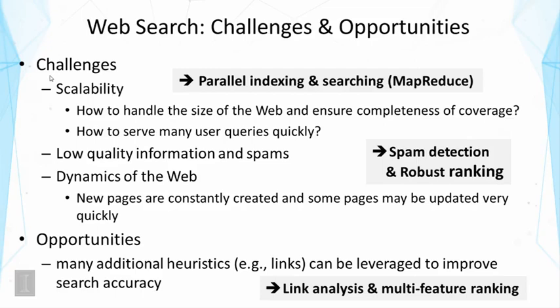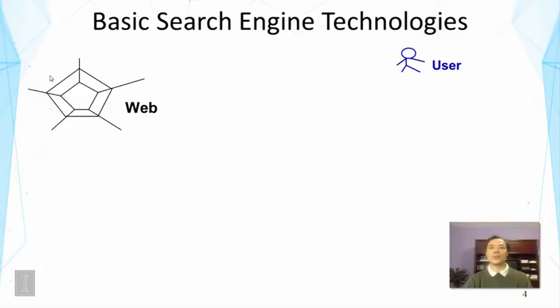The third line of techniques is link analysis — methods that allow us to improve search results by leveraging extra information. In web search generally, we use multiple features for ranking, not just link analysis, but also exploiting all kinds of cues like the layout of web pages or anchor text that describes a link to another page.